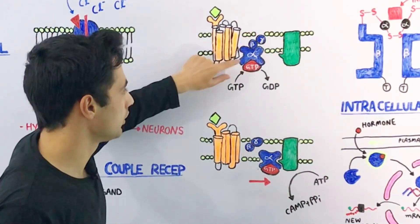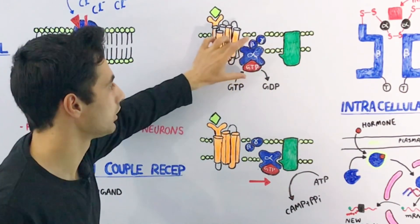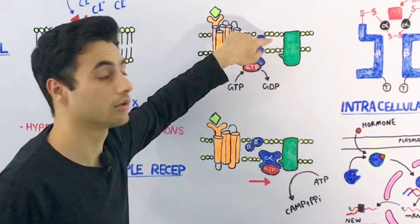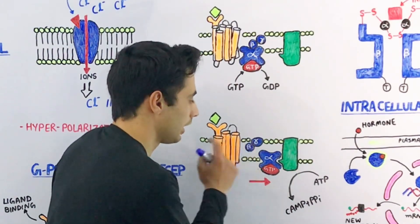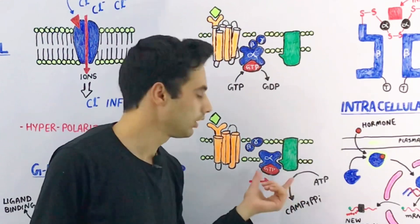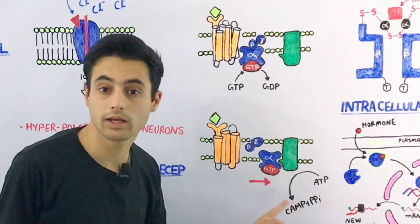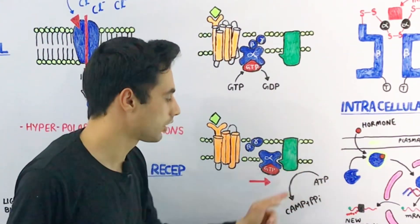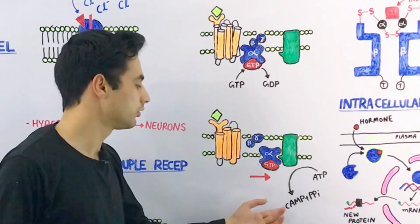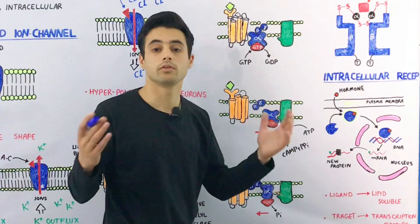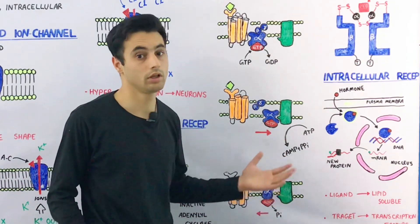The alpha subunit along with the attached GTP will detach from the gamma and beta subunit and move towards the adenylyl cyclase — it's an enzyme. When activated, adenylyl cyclase will convert ATP (adenosine triphosphate) into cyclic AMP, releasing two inorganic phosphates. This cyclic AMP will then perform physiological and biochemical reactions, for example phosphorylation or dephosphorylation of proteins and protein kinase activation.